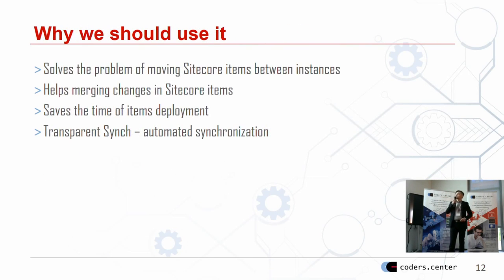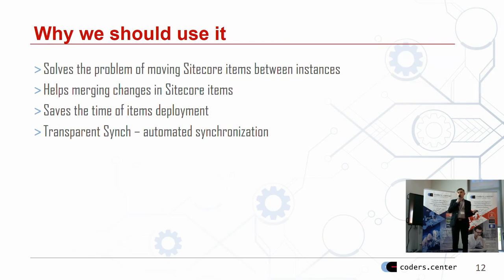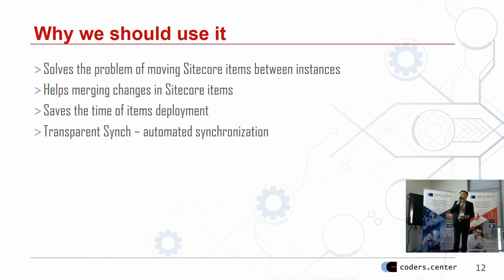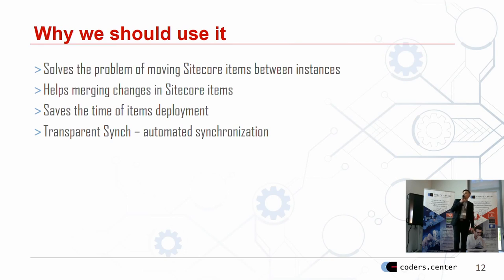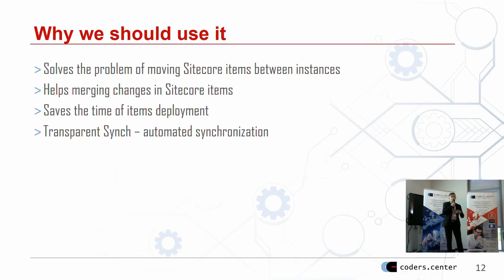Why should we use Unicorn? We should use it to solve the problem of moving Sitecore items between instances — it will be really easy to just serialize items, push to the repo, and synchronize on the server. It helps with great merging of changes, as I mentioned, since we have YAML which merges really well. And also, it saves the time of item deployments — it can be automated. There is also a TransparentSync which can automatically synchronize items that have changed when we pull changes from the repository.